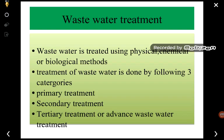Wastewater generated from domestic use should not be directly disposed of. It should first be treated and must satisfy all the specified limits of BIS standards before disposal. Wastewater is treated using physical, chemical, and biological methods, and we have to make use of all three methods for treatment.